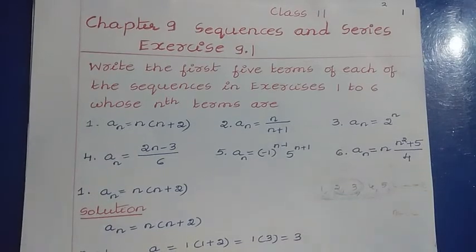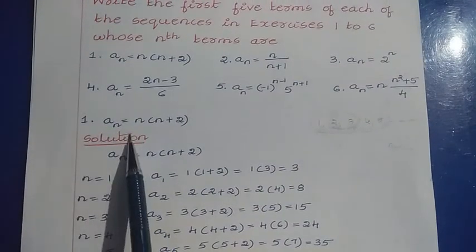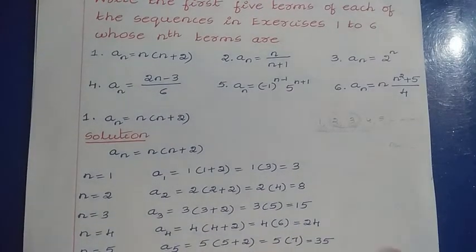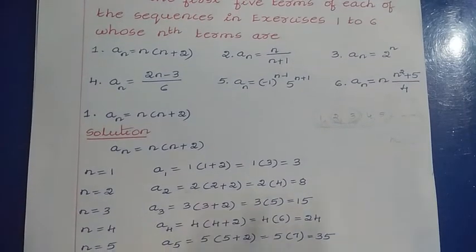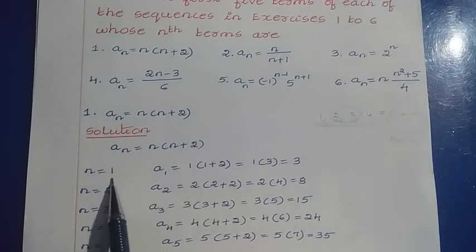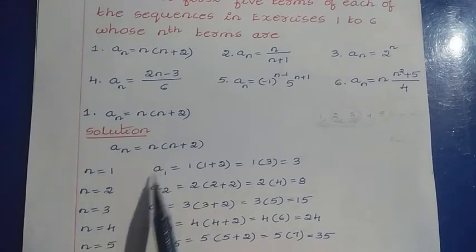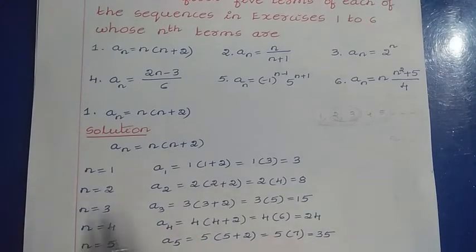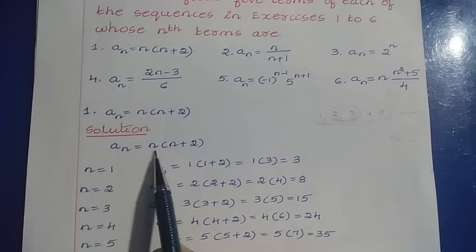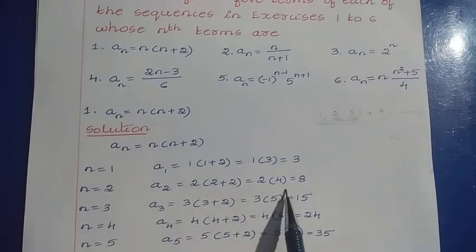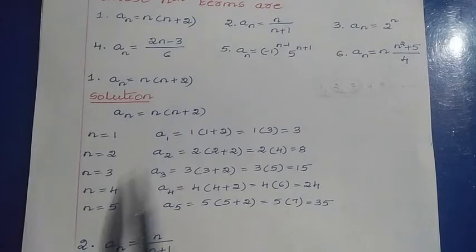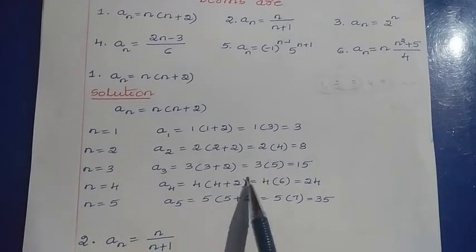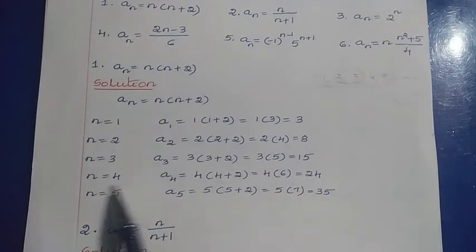Now let us solve the problems. Question 1: aₙ = n(n + 2). The nth term is given and we need to find the first 5 terms — just put the values into the nth term formula. For n = 1: a₁ = 1 × (1 + 2) = 1 × 3 = 3. For n = 2: a₂ = 2 × (2 + 2) = 2 × 4 = 8. For n = 3: a₃ = 3 × (3 + 2) = 3 × 5 = 15. For n = 4: a₄ = 4 × (4 + 2) = 4 × 6 = 24.